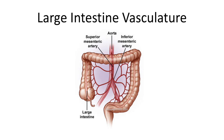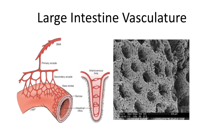Now I would like to discuss the large intestine vasculature briefly. Here is a very simplified picture showing the blood supply of the large intestine. Have a look at the superior mesenteric artery, because that will be shown in the next picture. All vascular plexuses are connected in a long channel running through the whole length of the intestine. Here is blood forming from the superior mesenteric artery, and you can see the connection to the large intestine.